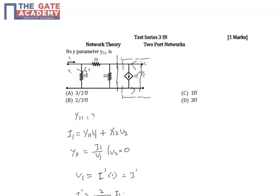Therefore I1/V1 equals 3/2, which gives Y11 = 3/2 Siemens or Mhos. So the correct solution is option A.